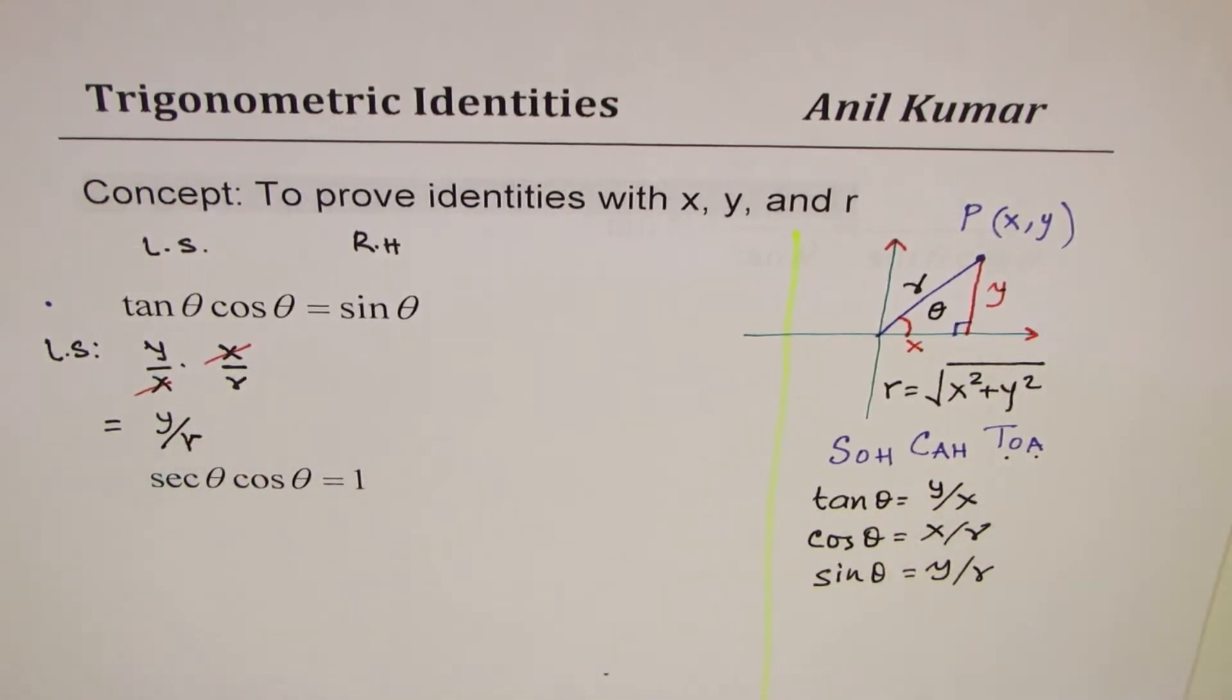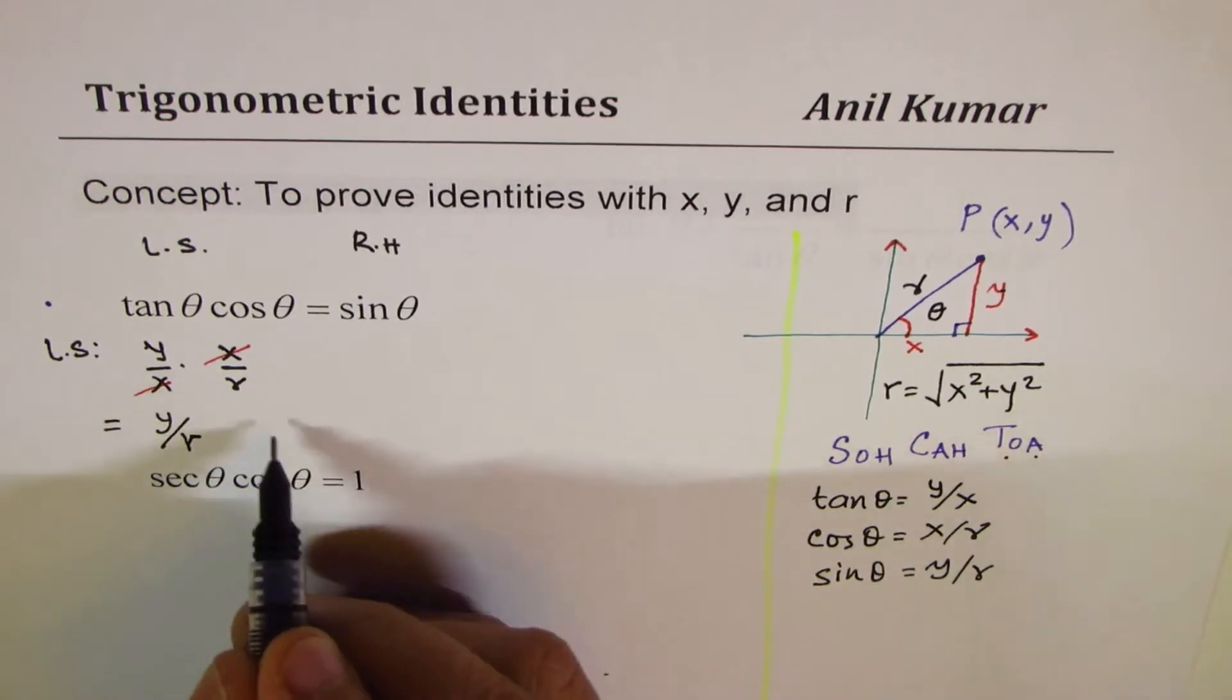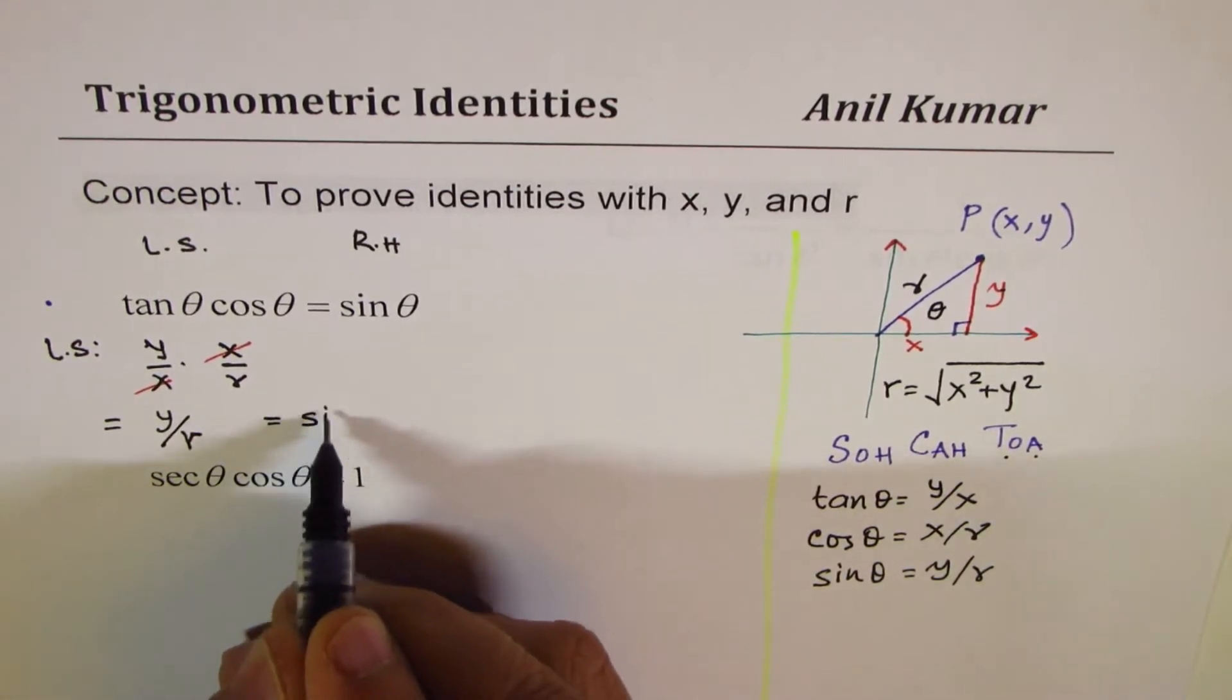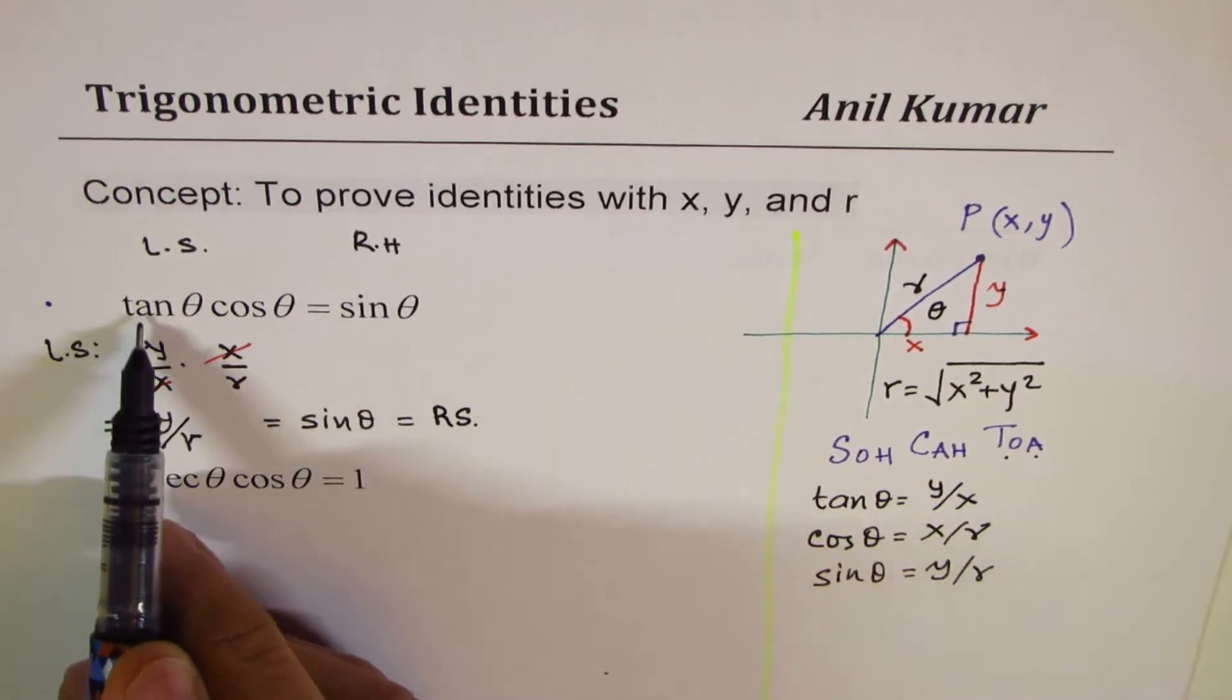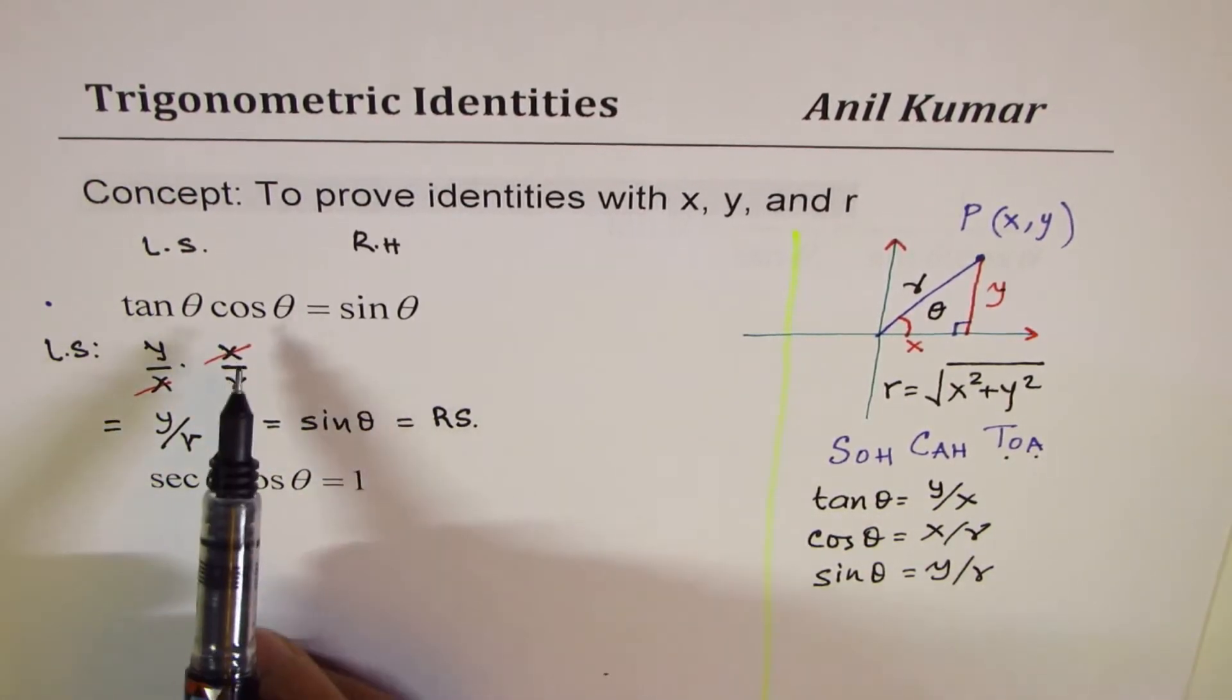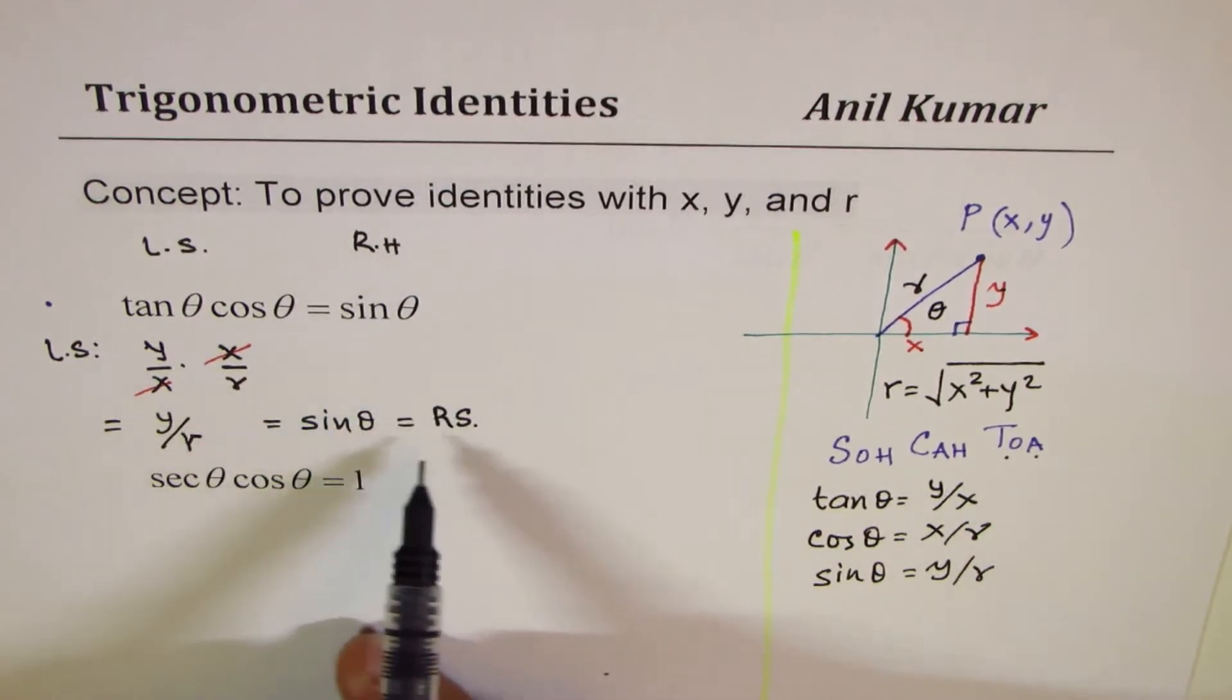Now, what is y over r? y over r is sin theta, which is clearly the right side. So, once you prove that left side is same as right side, we have already proven the identity. So, these are the steps involved.